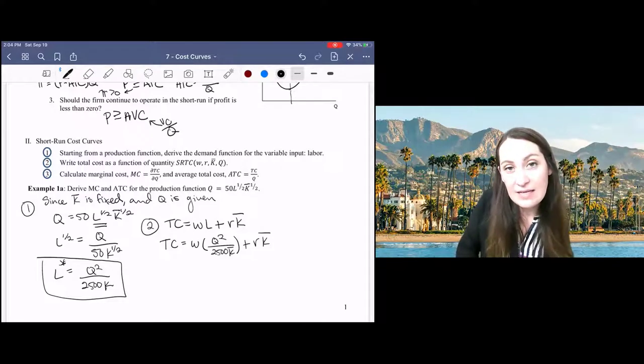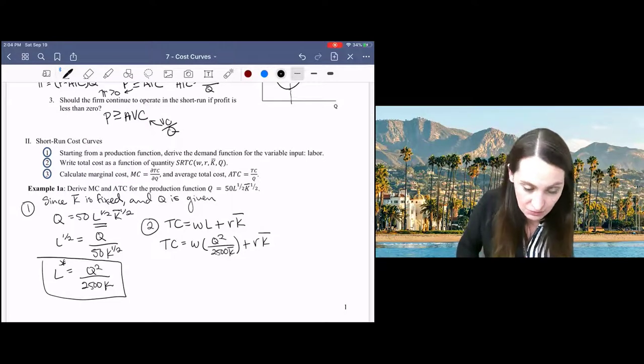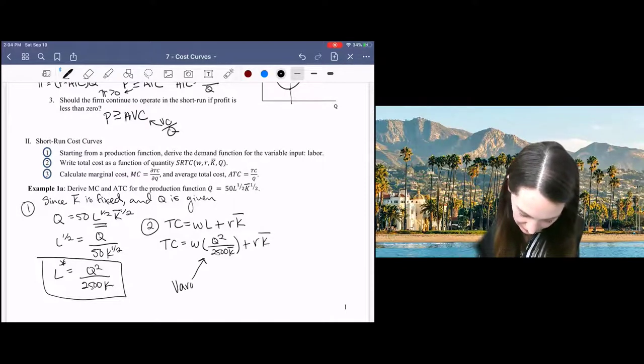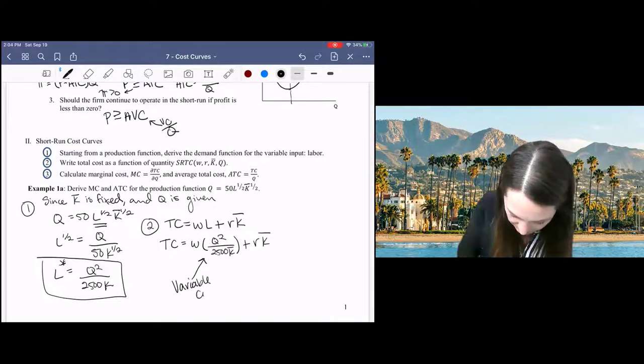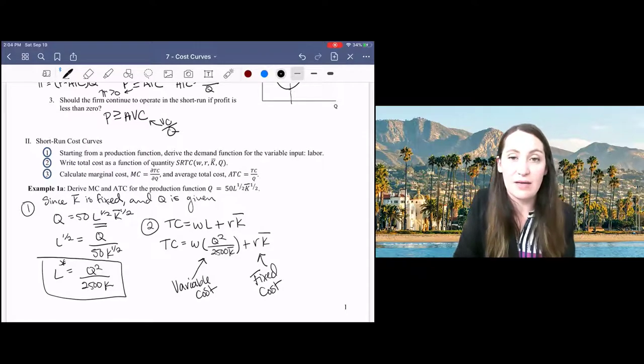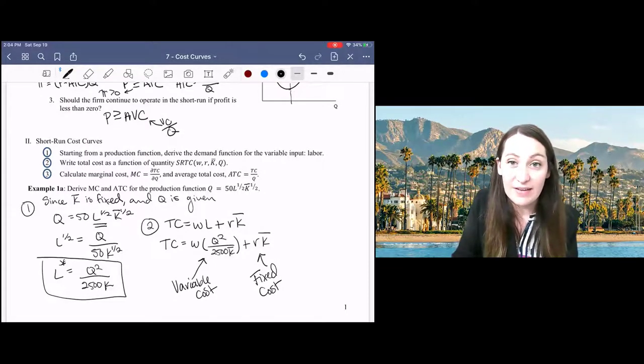You can see that the terms here, one is fixed and one is variable. So this term has a Q in it. That's my variable cost. And this term has no Q. That's a fixed cost, right? Of course, the cost associated with capital is fixed because capital is fixed in the short run.